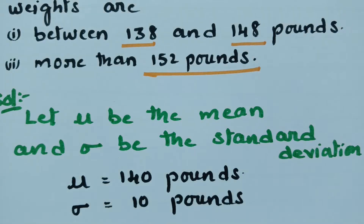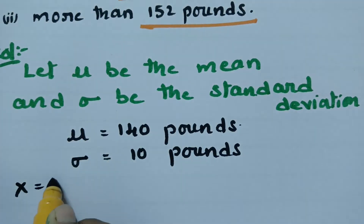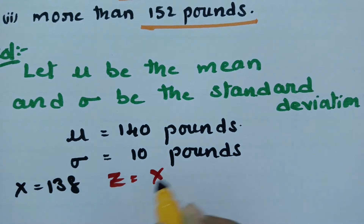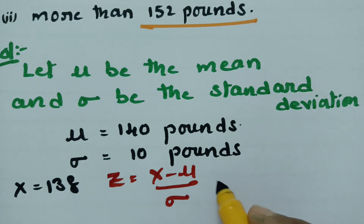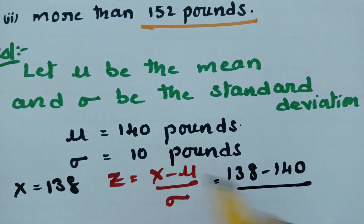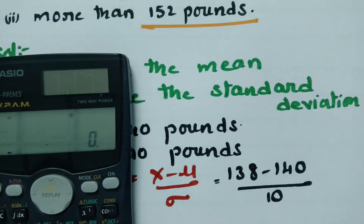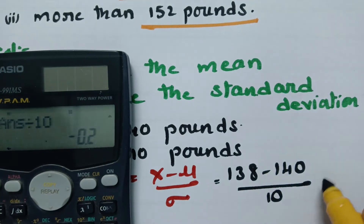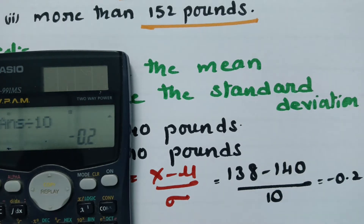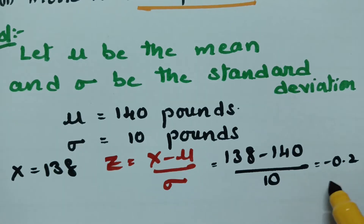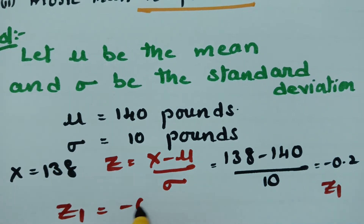When x is equal to 138, what will be the z value? z is equal to x minus mu by sigma. Substituting x = 138, mu = 140, sigma = 10: z = (138 − 140) / 10 = −0.2. So z1 = −0.2. Since it is negative, we plot on the left side of the ordinate.